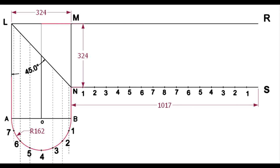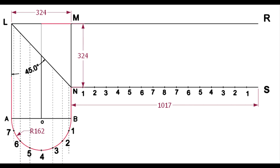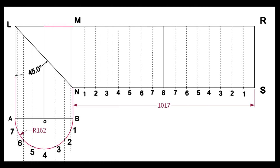Divide the line NS into 16 equal parts. Don't forget to number the lines. Draw vertical lines from 1, 2, 3, etc., touching the line MR.